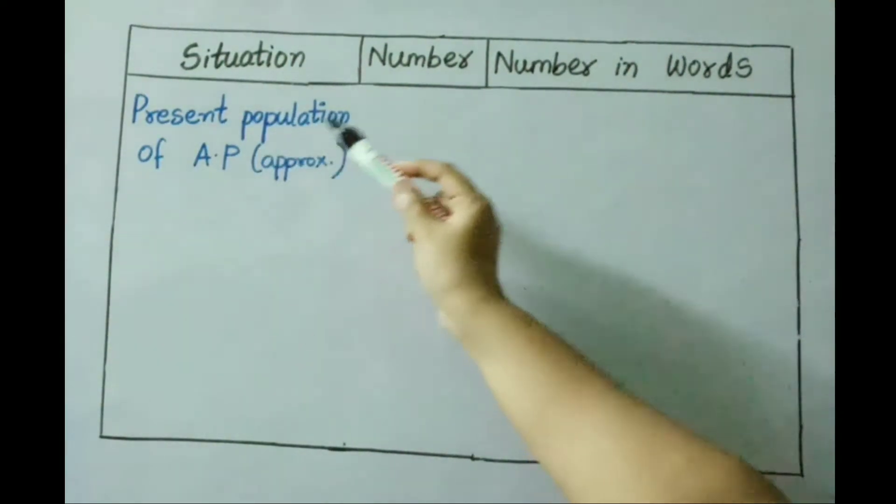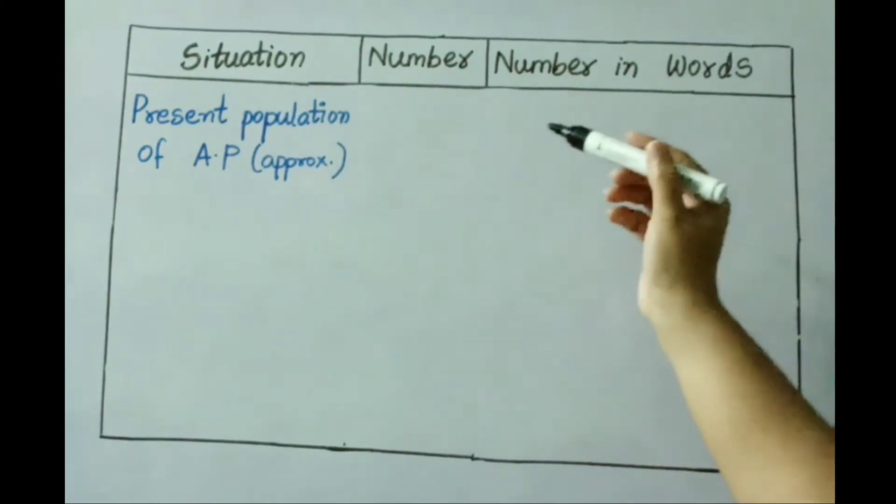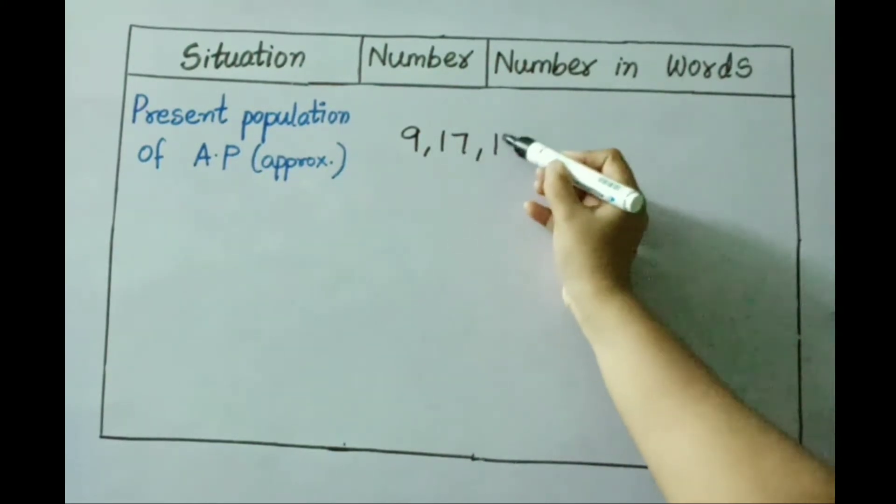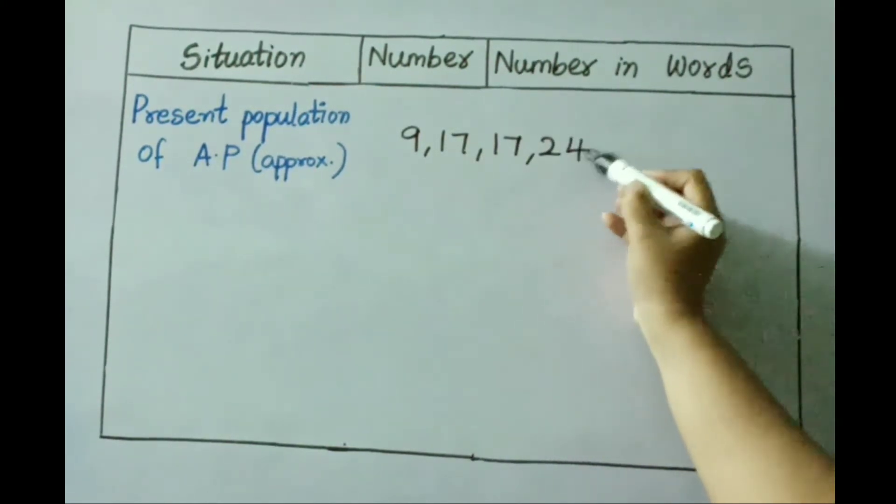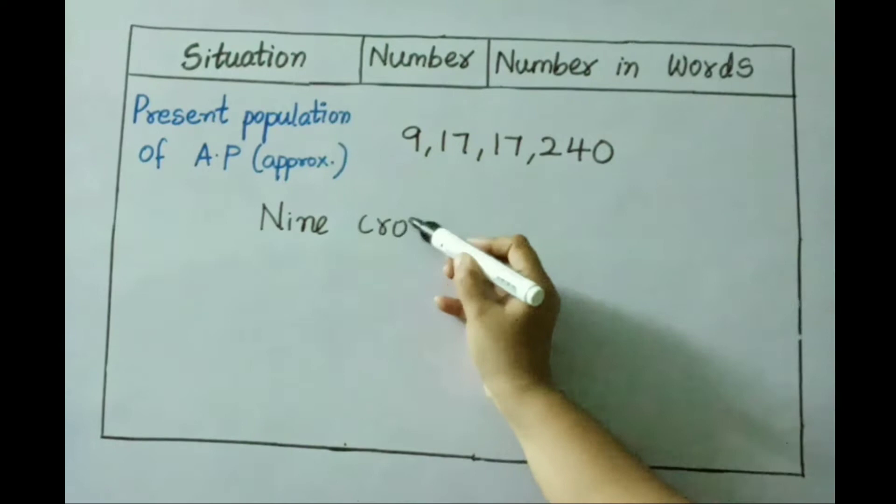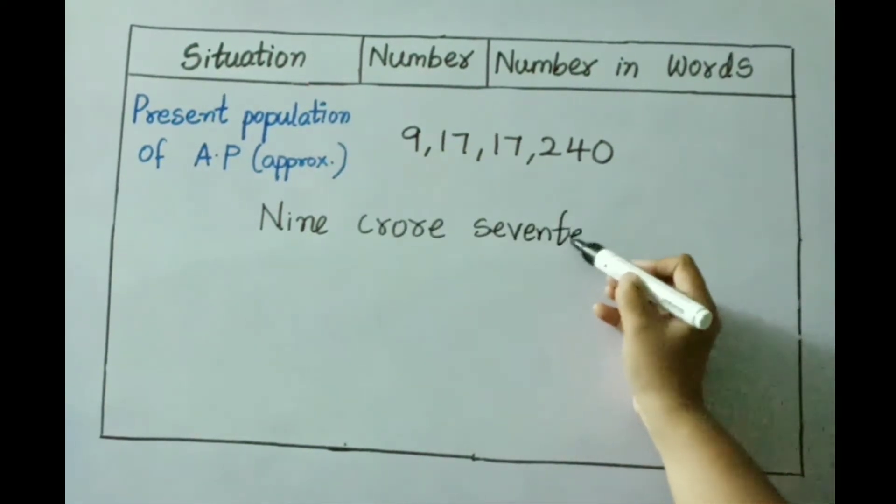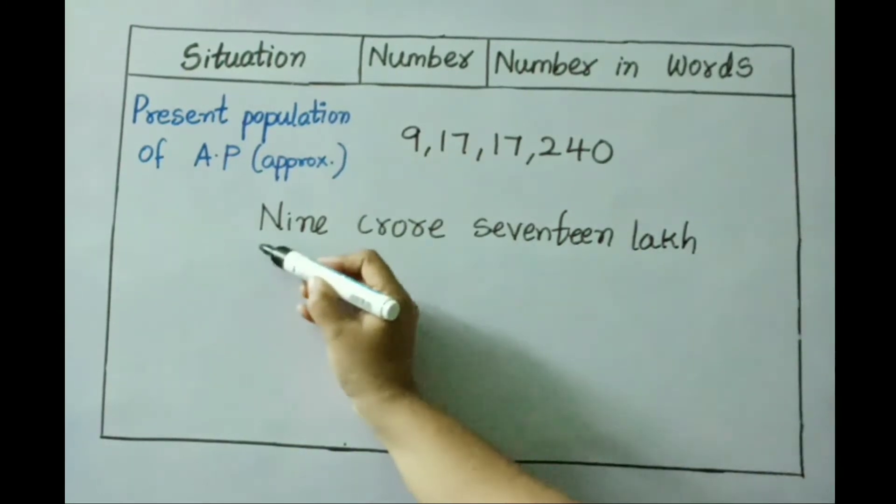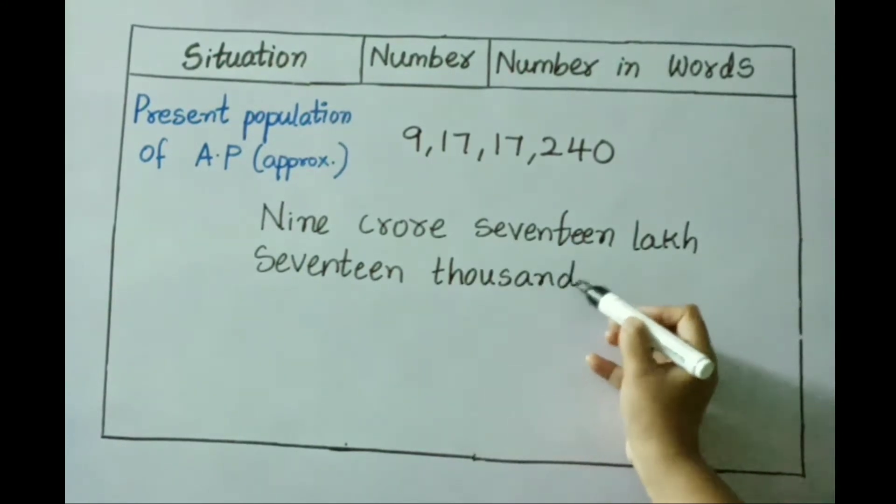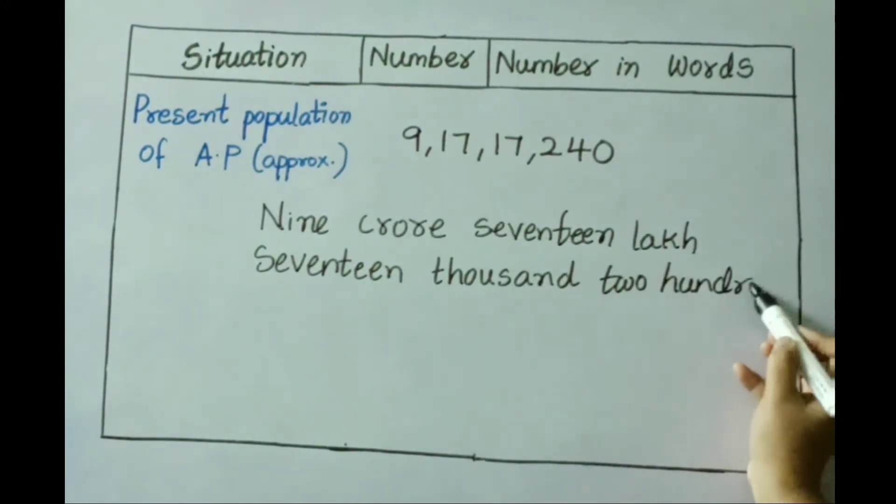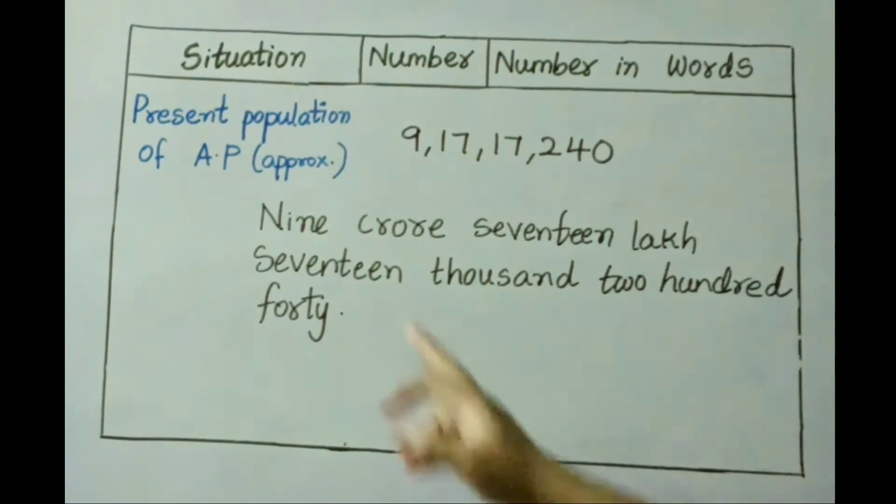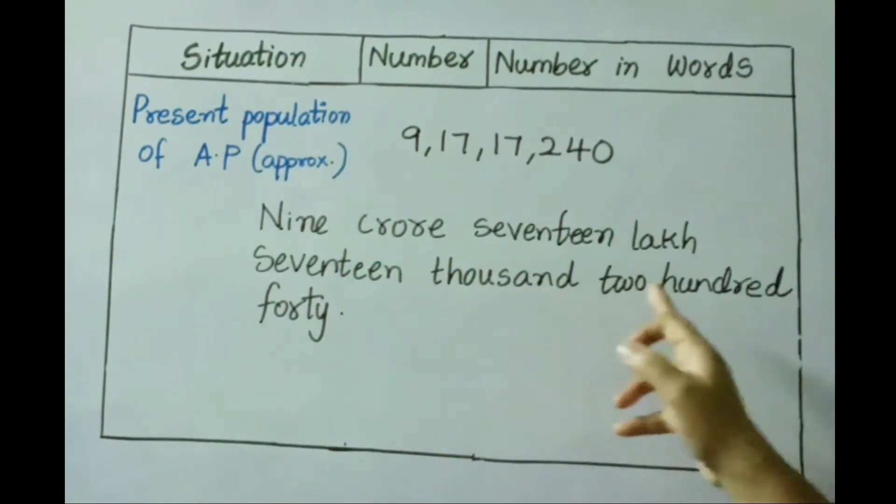See next one: present population of Andhra Pradesh approximately, that is nine crore seventy lakh seventeen thousand two hundred and forty. Let us write this number in words: nine crores seventy lakhs seventeen thousand two hundred forty.